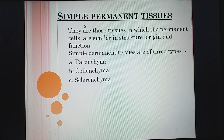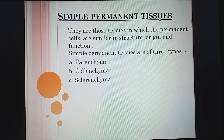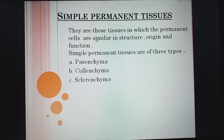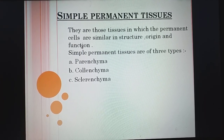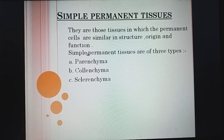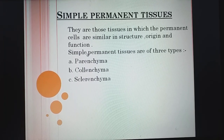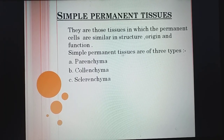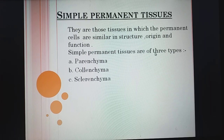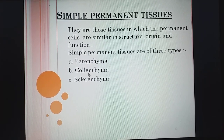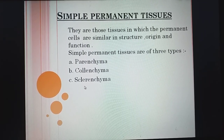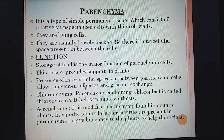Let's start with today's topic — simple permanent tissue. These are tissues in which the permanent cells are similar in structure, origin, and function. Simple permanent tissues are of three types: parenchyma, colenchyma, and sclerenchyma.